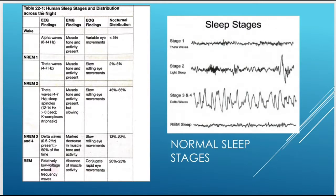Looking at the typical sleep stages diagram: stages 3 and 4 are the same as I mentioned. In stage 1, we have theta waves. Stage 2 is light sleep, where you'll see K complexes and sleep spindles. Stages 3 and 4 have delta waves — slow wave sleep — now consolidated to just stage 3. REM looks almost like stage 1, actually similar to the wake period — the EEG pattern looks very similar.